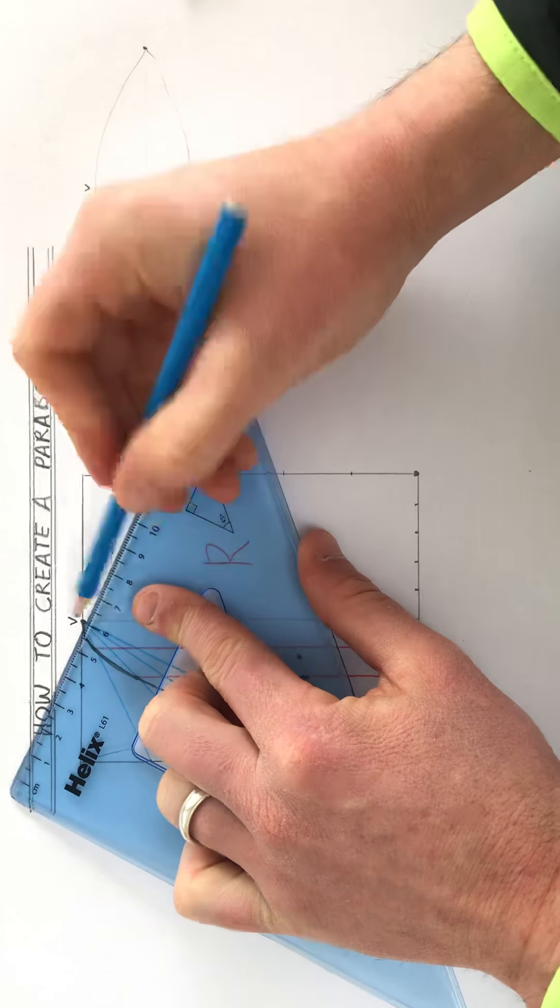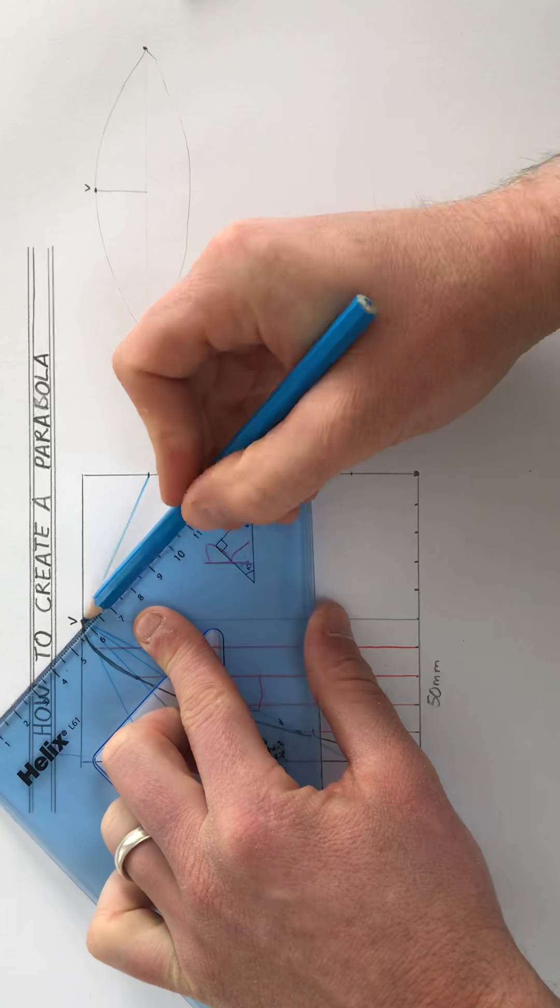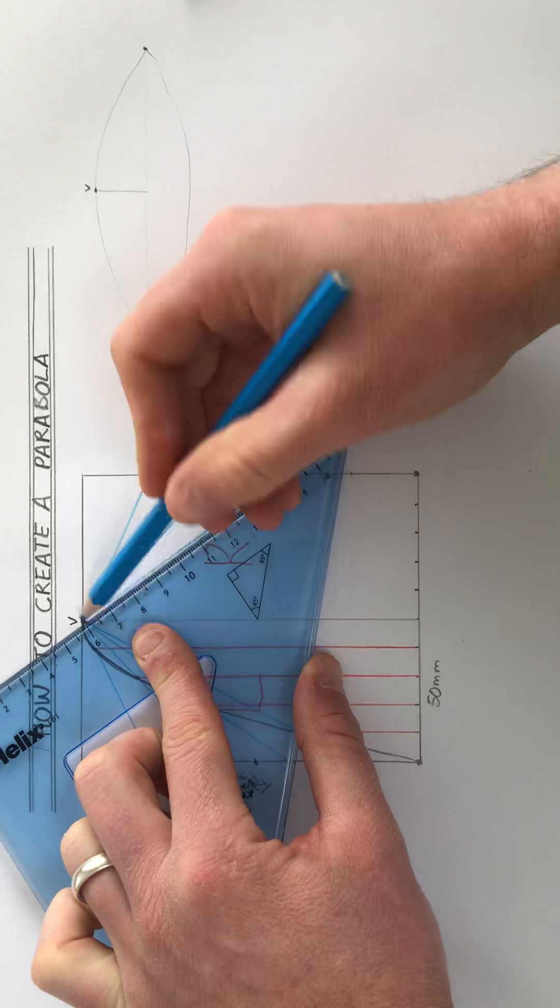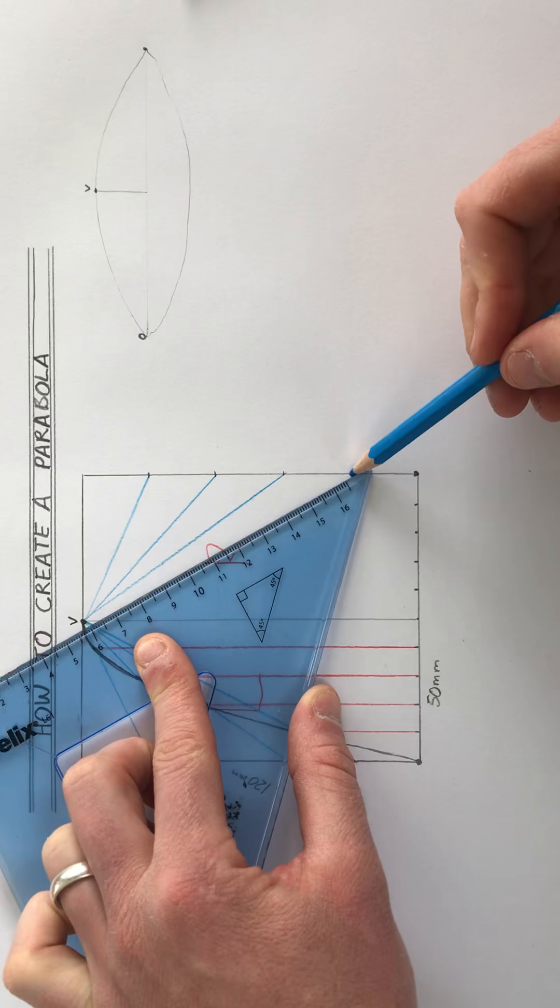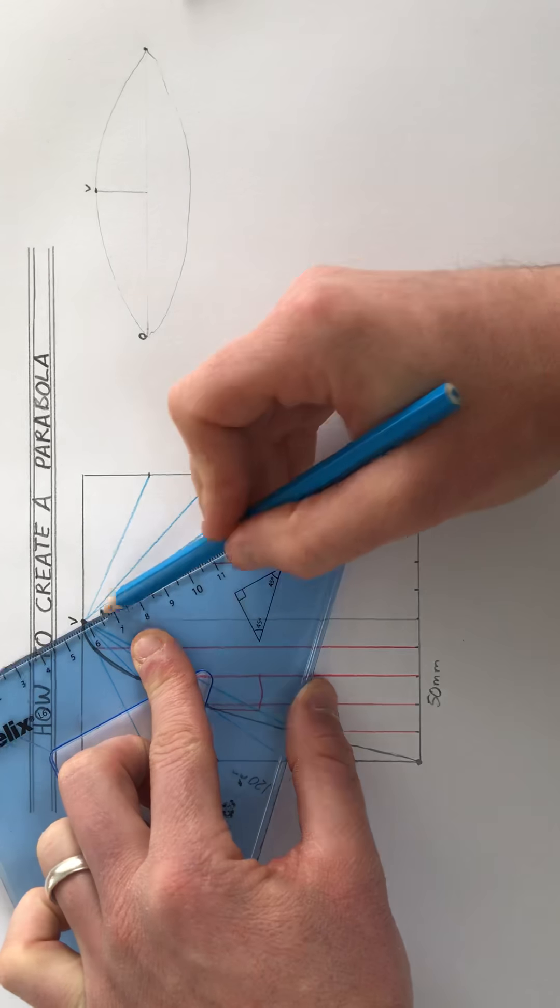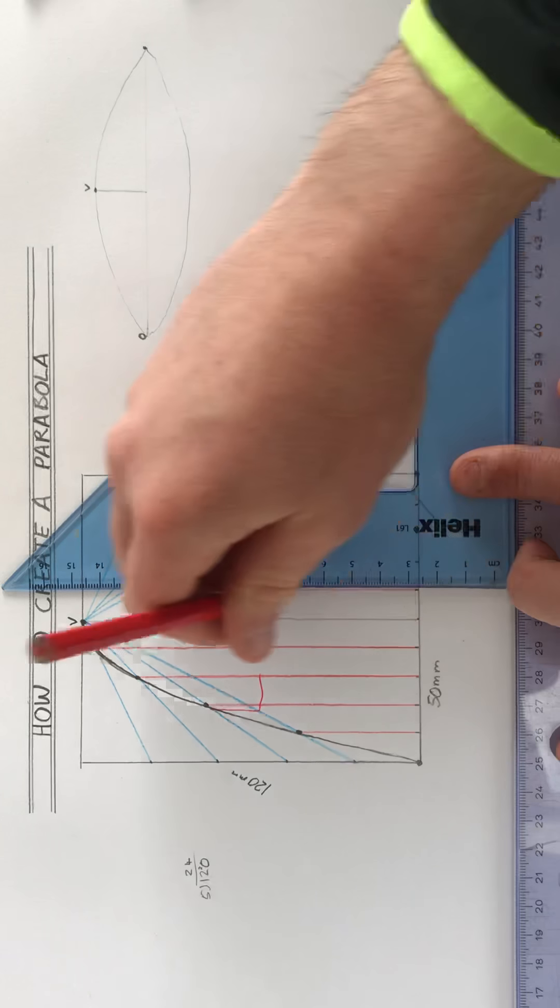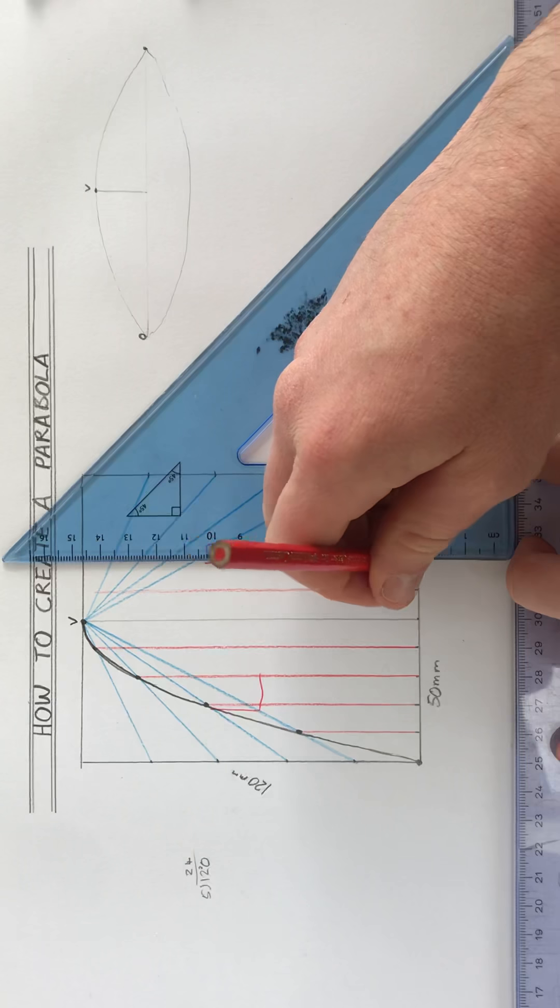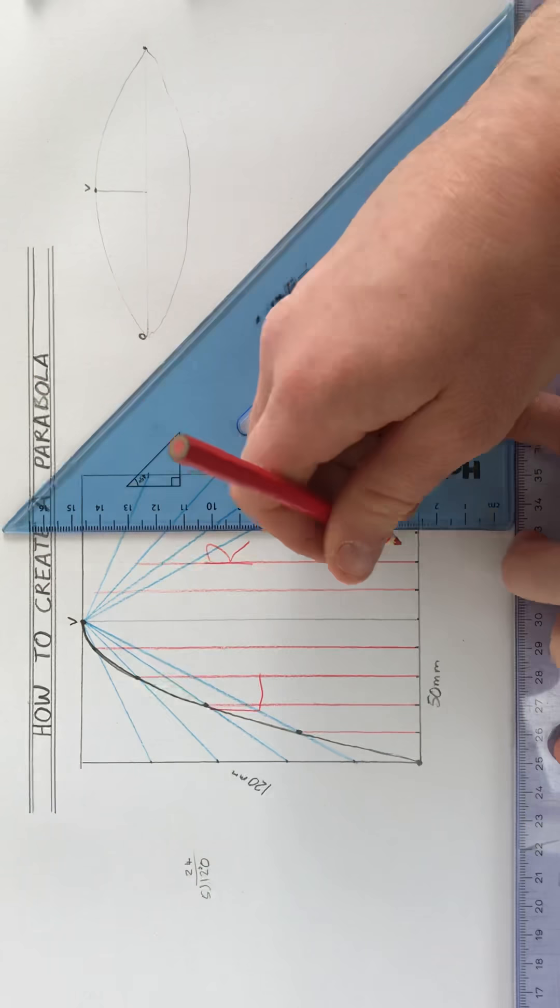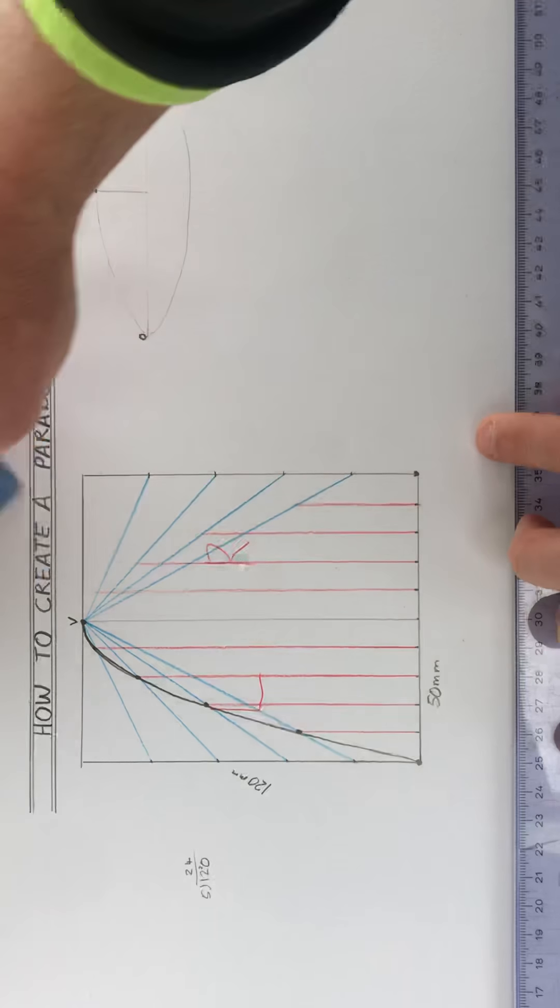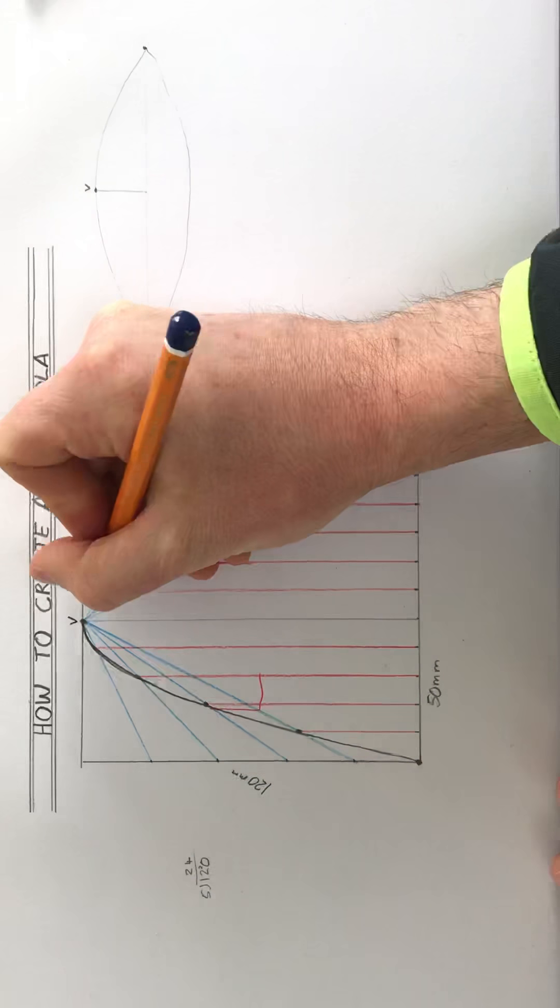Diagonals from the vertex to the opposite side. Second onto the second, third onto the third, fourth onto the fourth. Again, that gives me my points.